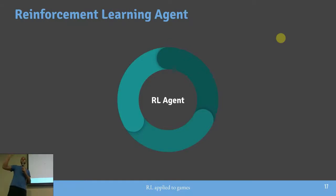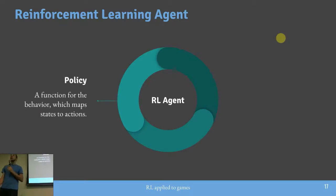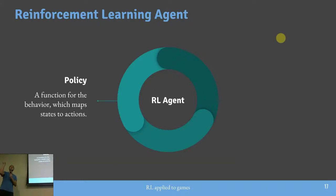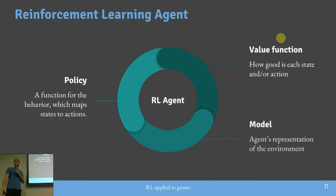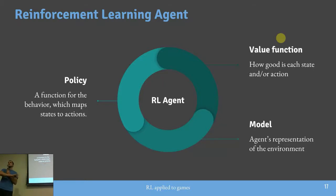Os componentes principais de um agente de Reinforcement Learning são: uma política — função que mapeia o estado para uma ação que vai aumentar o reward ao longo do tempo; uma Value Function — o quão bom é estar naquele estado ou tomar determinada ação; e um modelo — representação do ambiente que me diz: se você tomar essa ação, vai terminar nesse estado. Nem sempre o modelo está disponível, e esse é um dos grandes desafios: como maximizar a recompensa num ambiente completamente desconhecido?